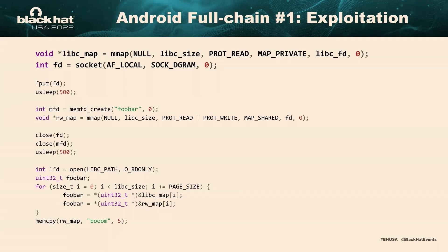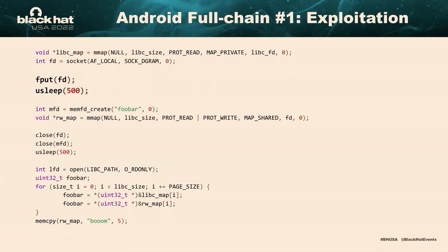The first step is to map libc — your target — using mmap, then create some file descriptor to trigger the vulnerability on. In the original code there was a huge bug trigger, but I've replaced this with fput, which is the kernel API for freeing file structures, just to distill it into one slide. The next step is triggering the bug: now you have a file descriptor pointing to a freed file in the kernel.